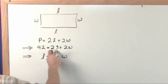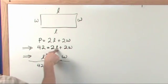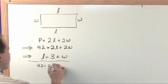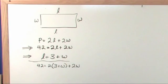Let's take this L and we'll plug it in here. So what we will get is 42 is equal to 2 times L but L is given by this so I'll put 3 plus W in plus 2W just kind of carrying this down. Now I can solve for W.